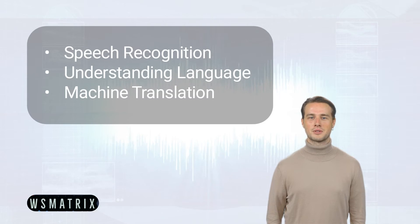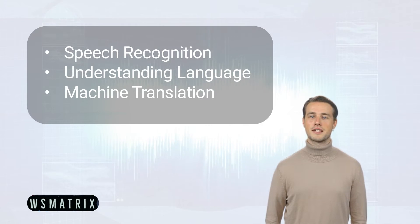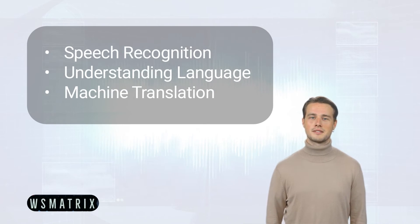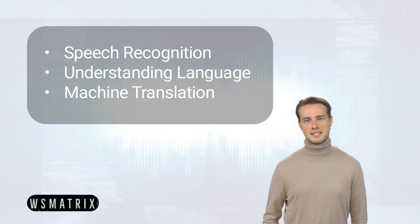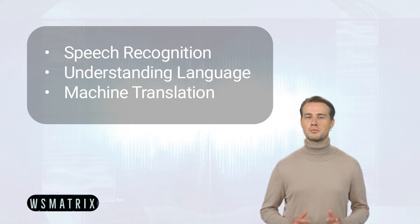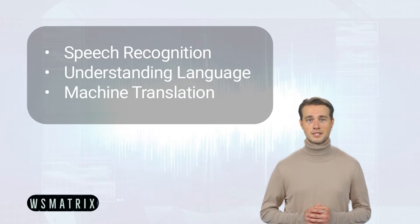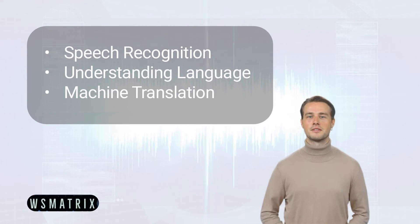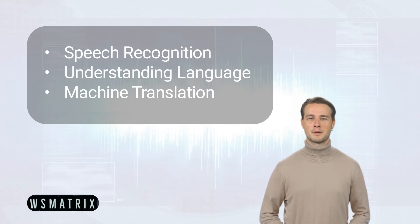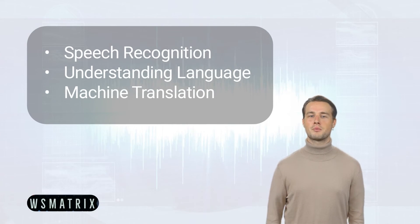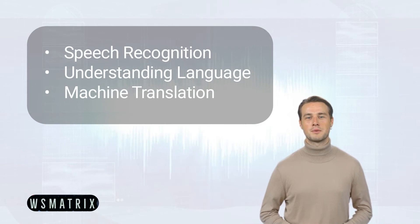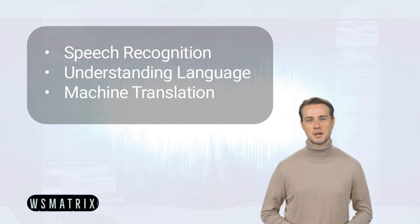Here are some of the potential applications of WAV-LM. For speech recognition, WAV-LM can be used to improve the accuracy of speech recognition systems. For example, it can be used to better recognize words that are spoken in a noisy environment or by people with accents. For natural language understanding, WAV-LM can be used to improve the understanding of natural language — for example, to better understand the meaning of spoken text. For machine translation, WAV-LM can be used to improve the accuracy of machine translation systems, for example to better translate text from one language to another.